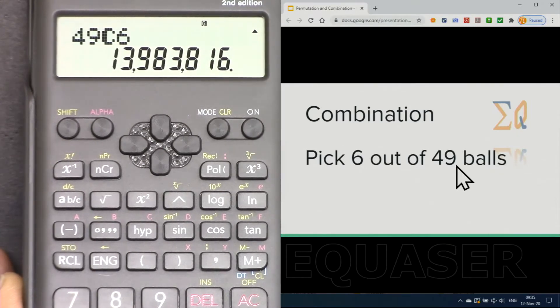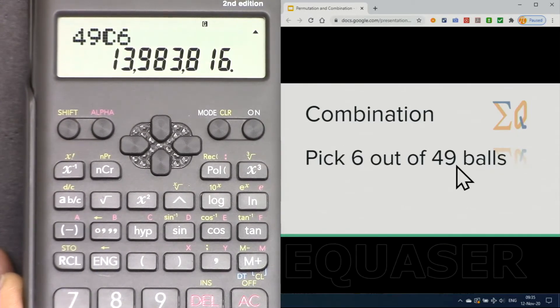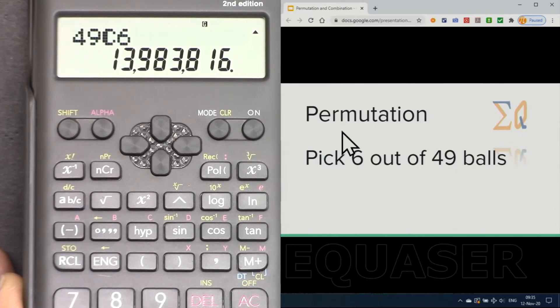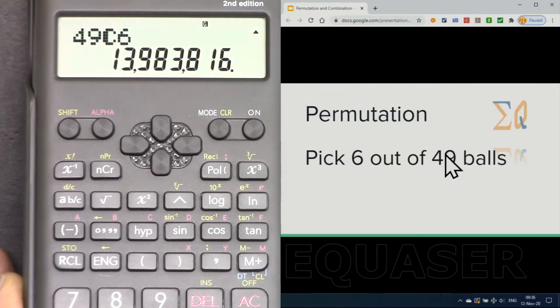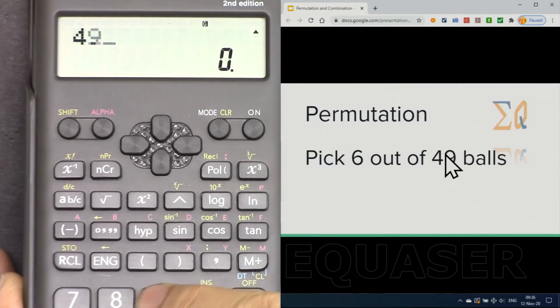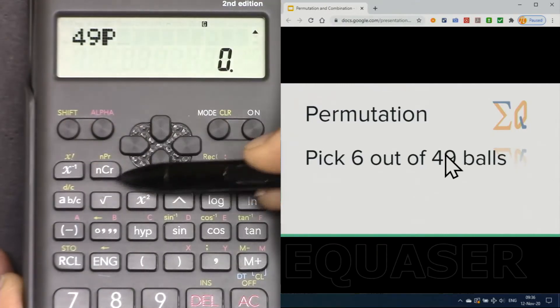This is now permutation. In permutation you are allowed to pick the same number multiple times. So let's see: 49, and I'm pressing shift, this button here, and you see P.